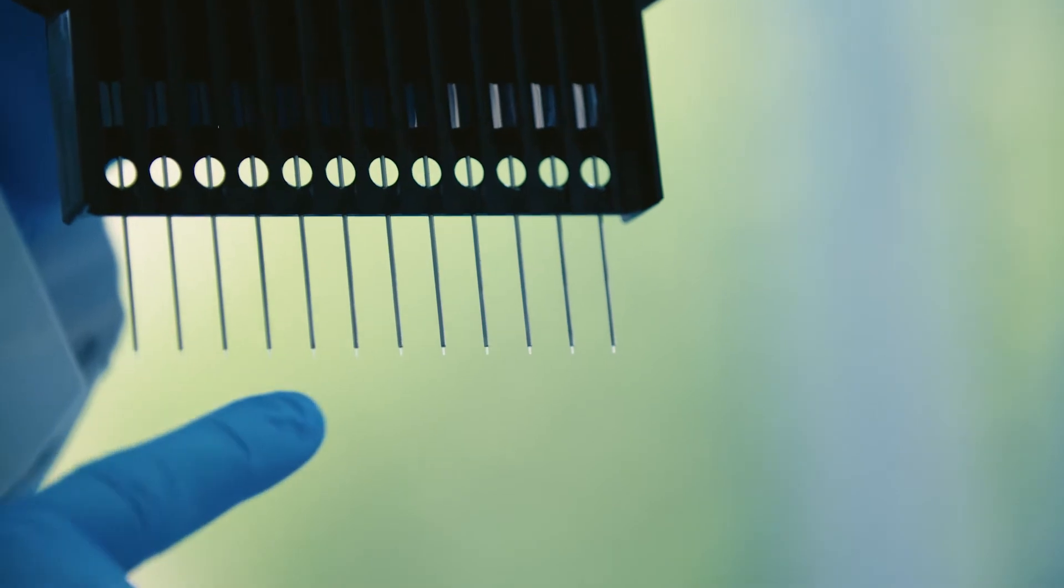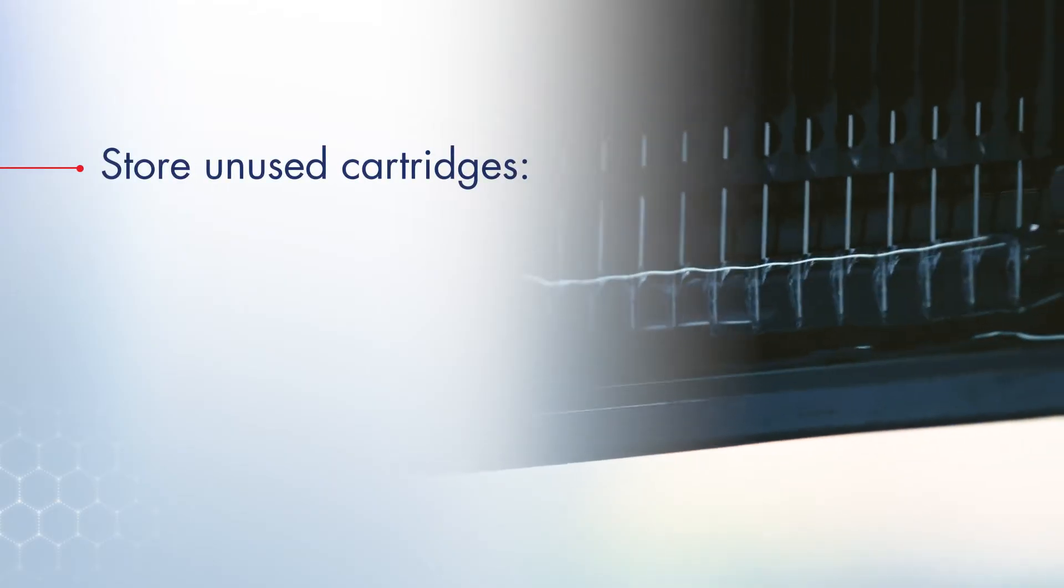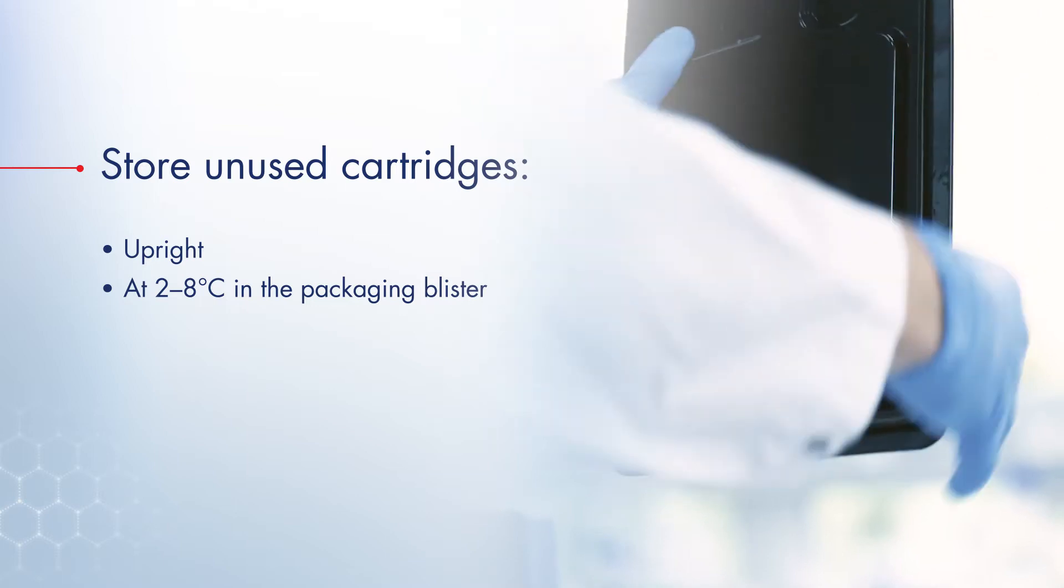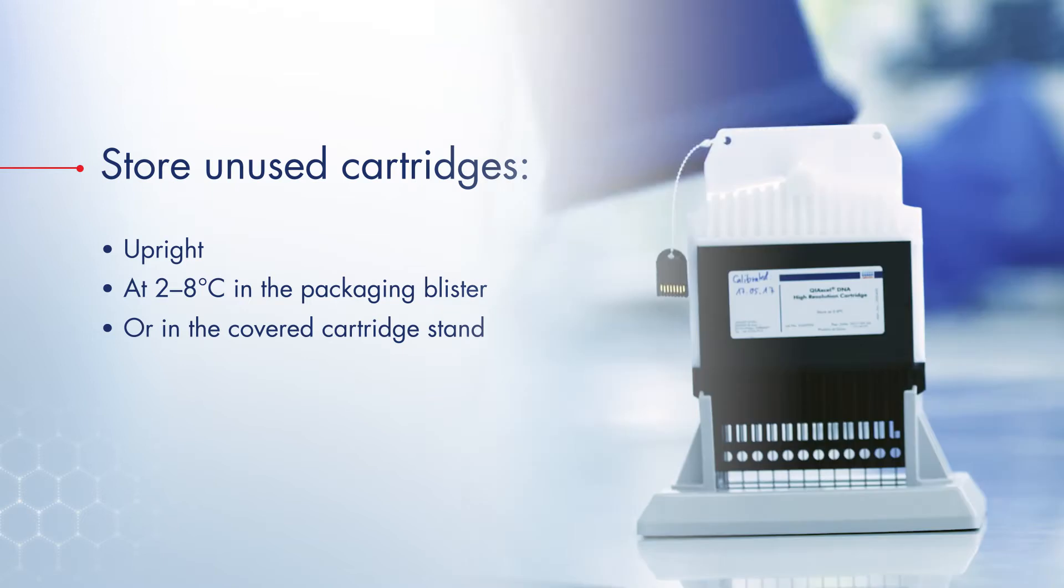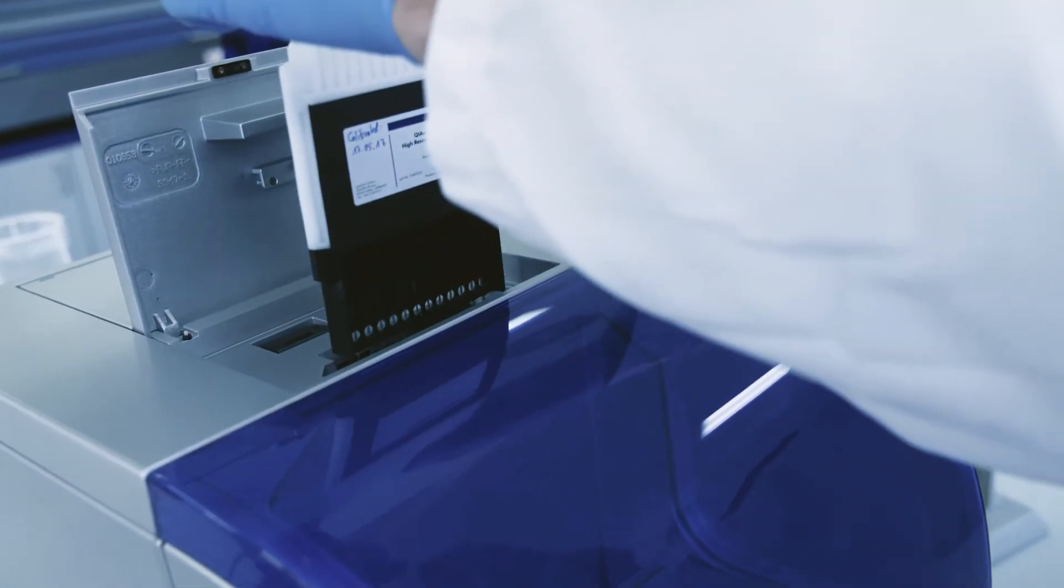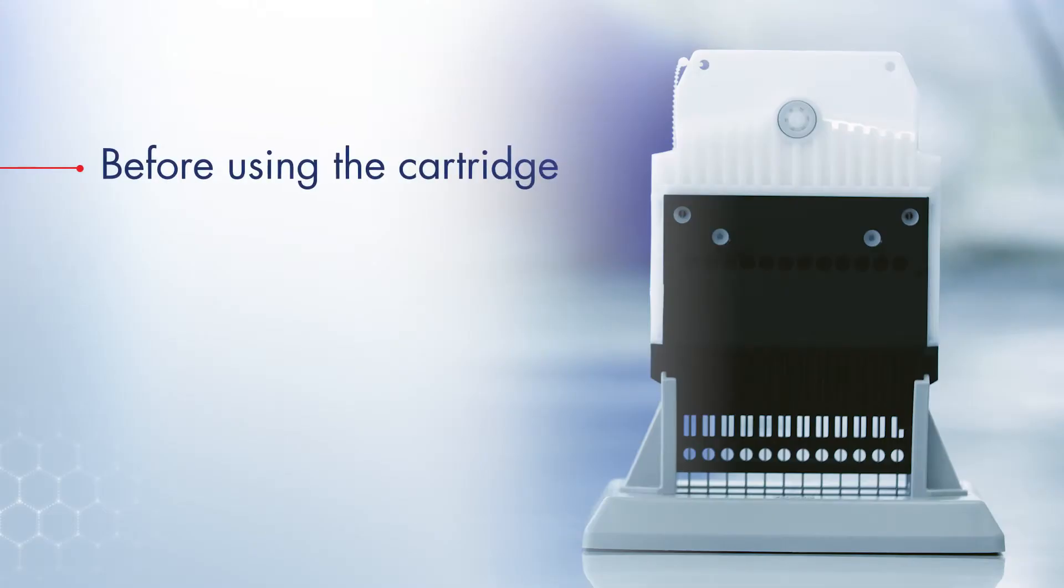Analytes are loaded into the gel capillaries and separated by size under the application of an electric field. Unused cartridges should always be stored upright at 2 to 8 degrees Celsius in the packaging blister or in the covered cartridge stand to protect the gel from drying and from direct light. If the cartridge is stored in the Kaixcel Advanced, the instrument should always be switched on. Before using the cartridge, it is crucial to equilibrate the cartridge for at least 20 minutes to room temperature to ensure proper analyte separation.